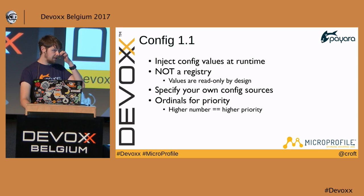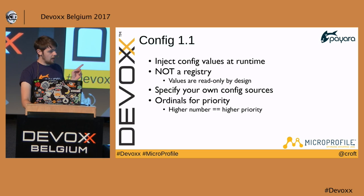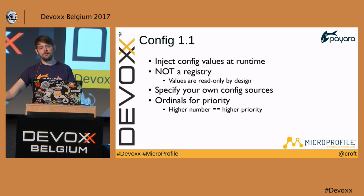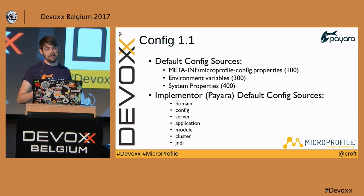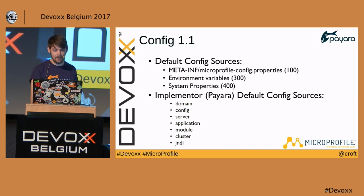There are ordinals for priority: if you want to set default config source values, you can override them with config sources of a higher ordinal. The default sources include a microprofile-config.properties file in the META-INF directory (lowest ordinal), then environment variables override those, and system properties can override those. Each implementer can also add their own default config sources.